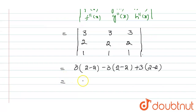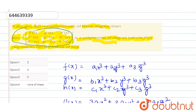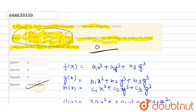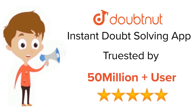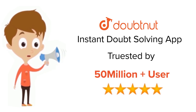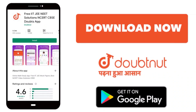After solving, the degree value equals zero. So option 4 is the correct answer. The final answer is zero. Thank you. For class 6 to 12, IIT JEE and NEET level, trusted by more than 5 crore students — download the Doubtnut app.